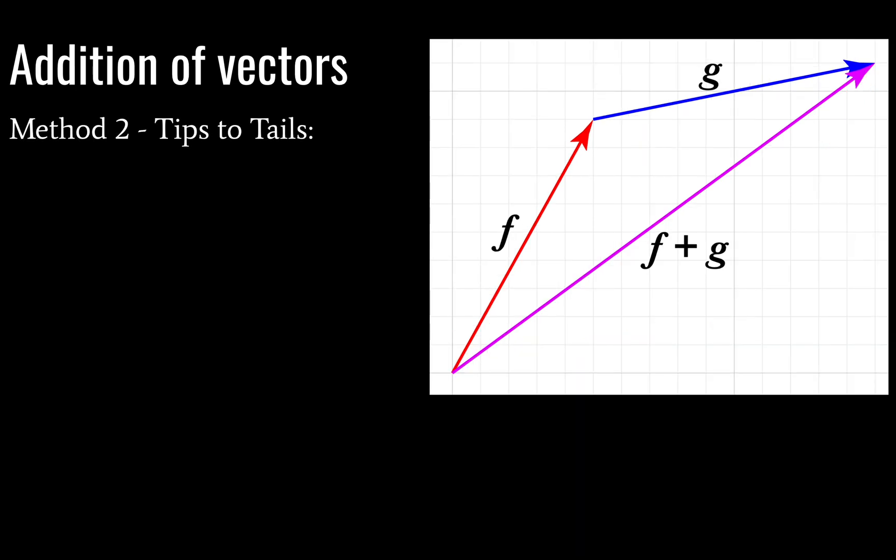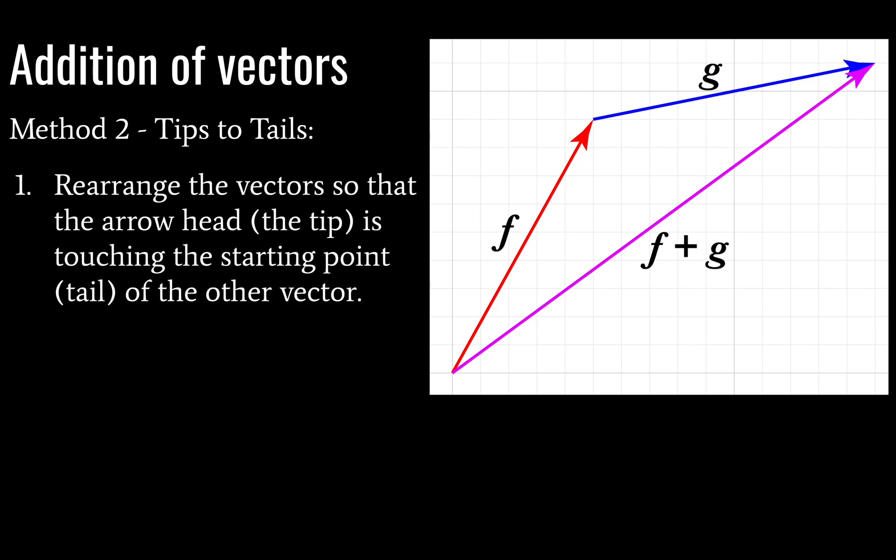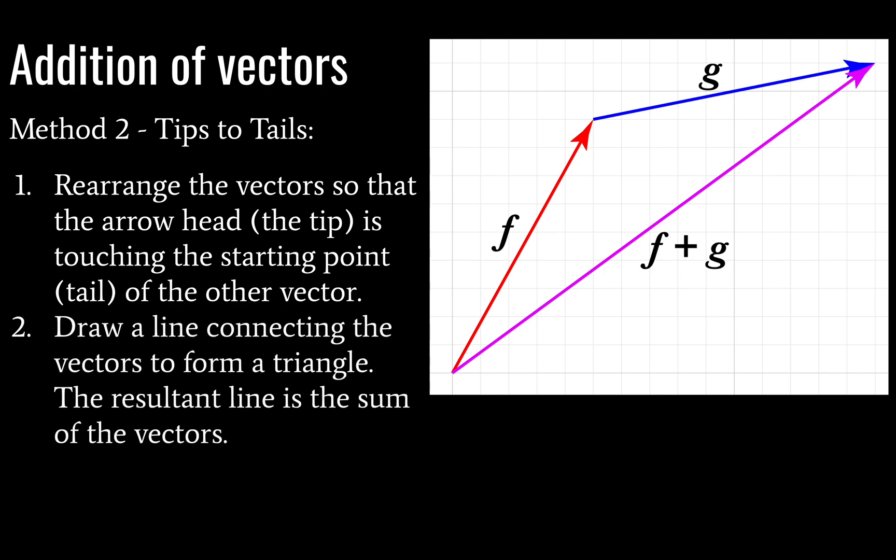Okay, method two is the tip to tail method. And this isn't in Socos for some reason, your textbook, but anyway, it's slightly faster. So you just arrange the vectors so that the tail of one vector is pointed into the tip of another one. It doesn't matter if you start with g or f, the result is going to be the same. So you just draw a line connecting the tail of vector f here to the tip of vector g, and there's your new vector.